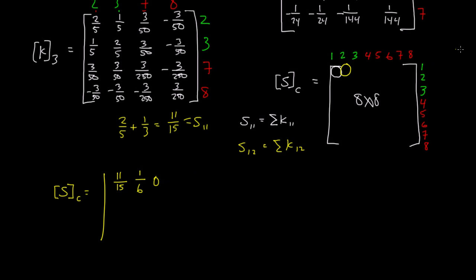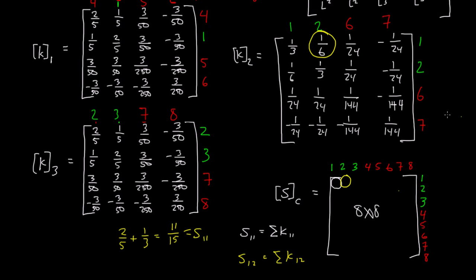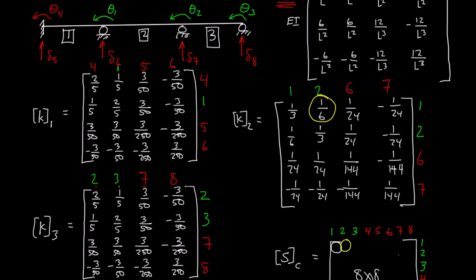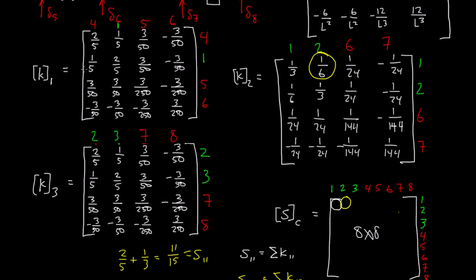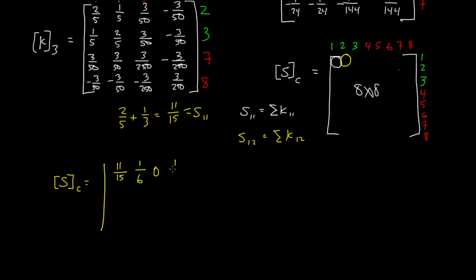Then we move on to S sub 1,4. If we look at K sub 1, we have a row 1, column 4. We have this 1/5 here. Then we move on to K sub 2. We have a 1, but no 4th column. K sub 3 has nothing, no 1,4. So that means S sub 1,4 is 1/5.